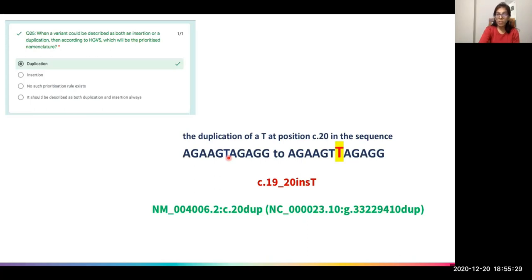These quiz answers should have clarified the basics of HGVS nomenclature, prioritization rules, and the differences between NG and NC IDs — all of which will be very important for clinical interpretation of variants in further sessions. If you have any more questions, feel free to reach out. Thank you so much for watching.